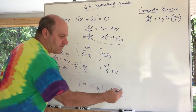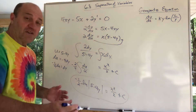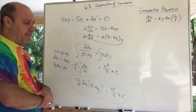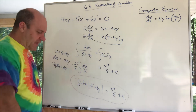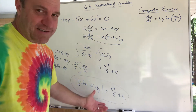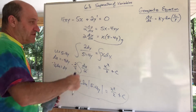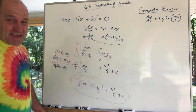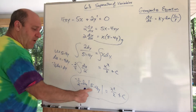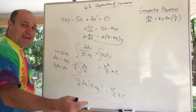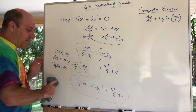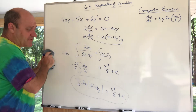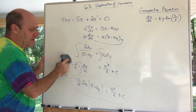We have solved the differential equation. There was no initial value; we separated and integrated. I would call this an implicit general solution. If there were an initial value, I could find C, and maybe they want an explicit solution — meaning they want me to solve for y. That takes a little bit of work. Let me do that.